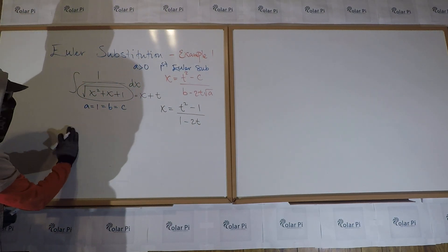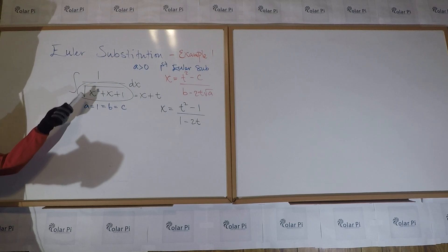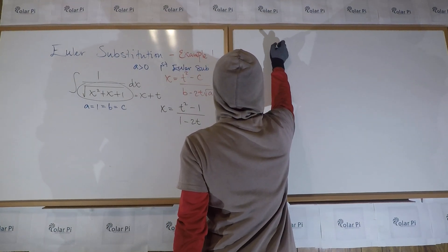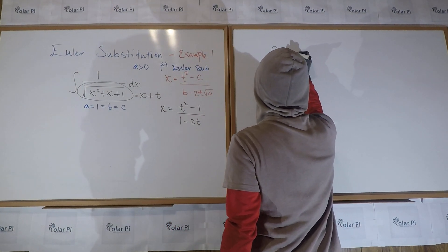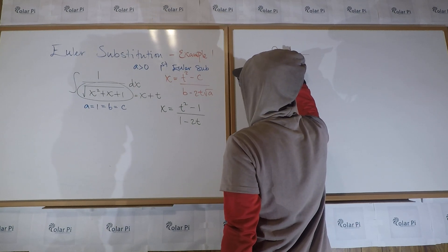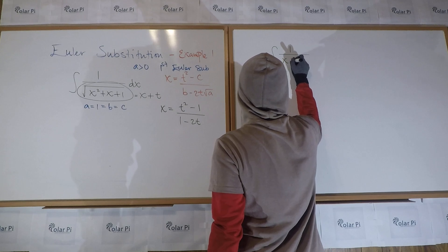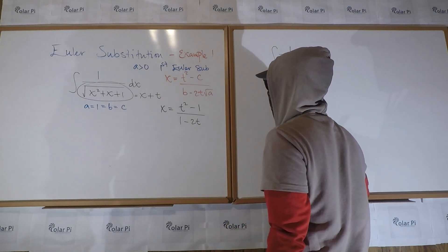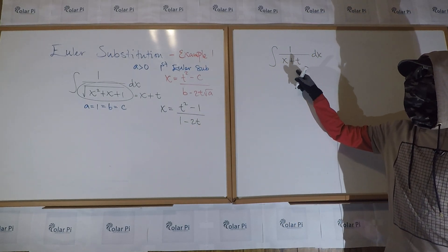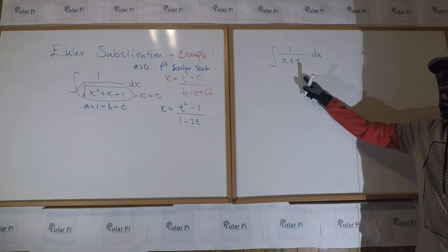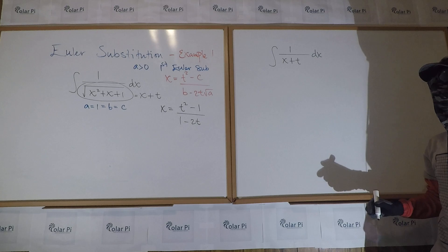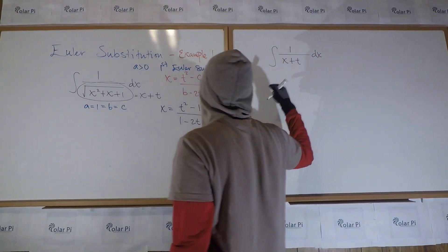So what we're saying is that this denominator here is really X root A plus T. Well, since A is one in this case, it's just X plus T. So if that's so, then in order for us to rewrite our integral all in terms of T, we need to figure out what X plus T is.